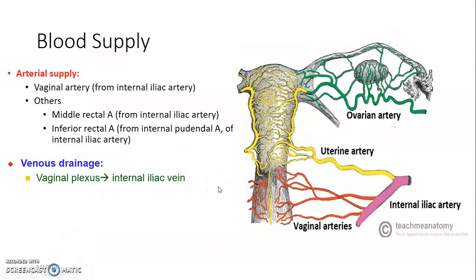The vagina is supplied by the vaginal artery from the internal iliac, but also gets some branches from the middle rectal and internal pudendal artery, which comes from the internal iliac artery. There is a plexus of veins around the vagina that drain into the internal iliac vein.